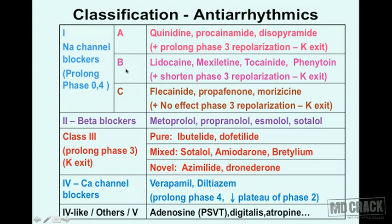Class 1B also has sodium channel blocking effects — prolonging phases 0 and 4 — but its effect on phase 3 repolarization is exactly opposite to class 1A: it shortens phase 3 repolarization rather than prolonging it. The class 1B agents are lidocaine, mexiletine, tocainide, and phenytoin.